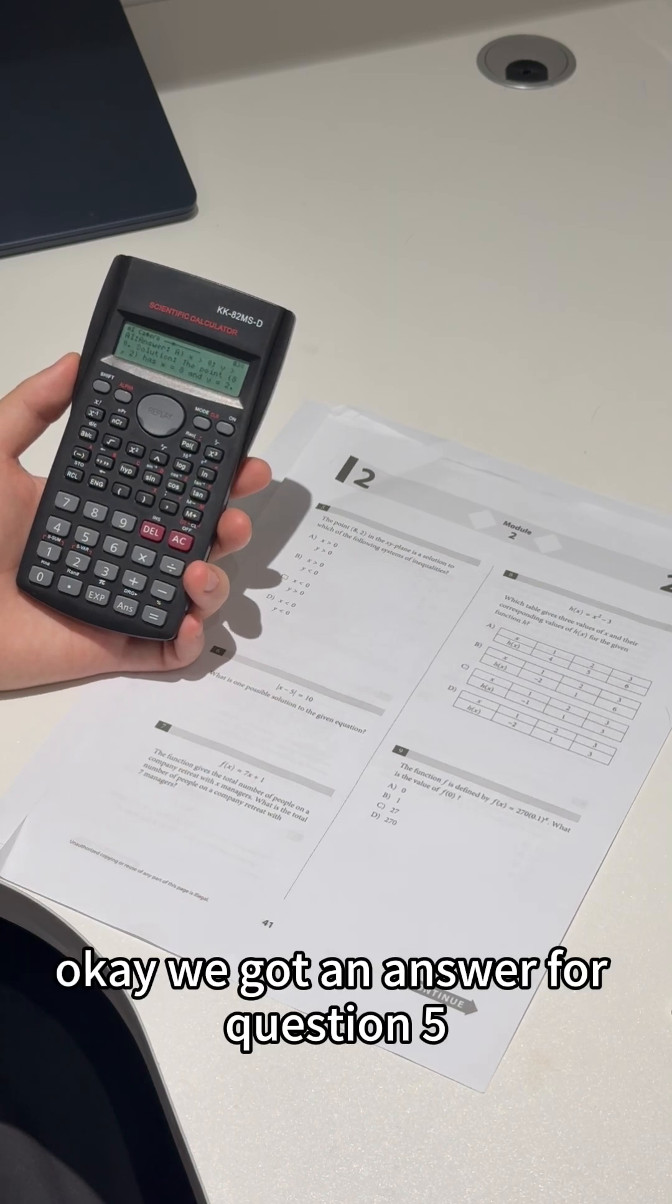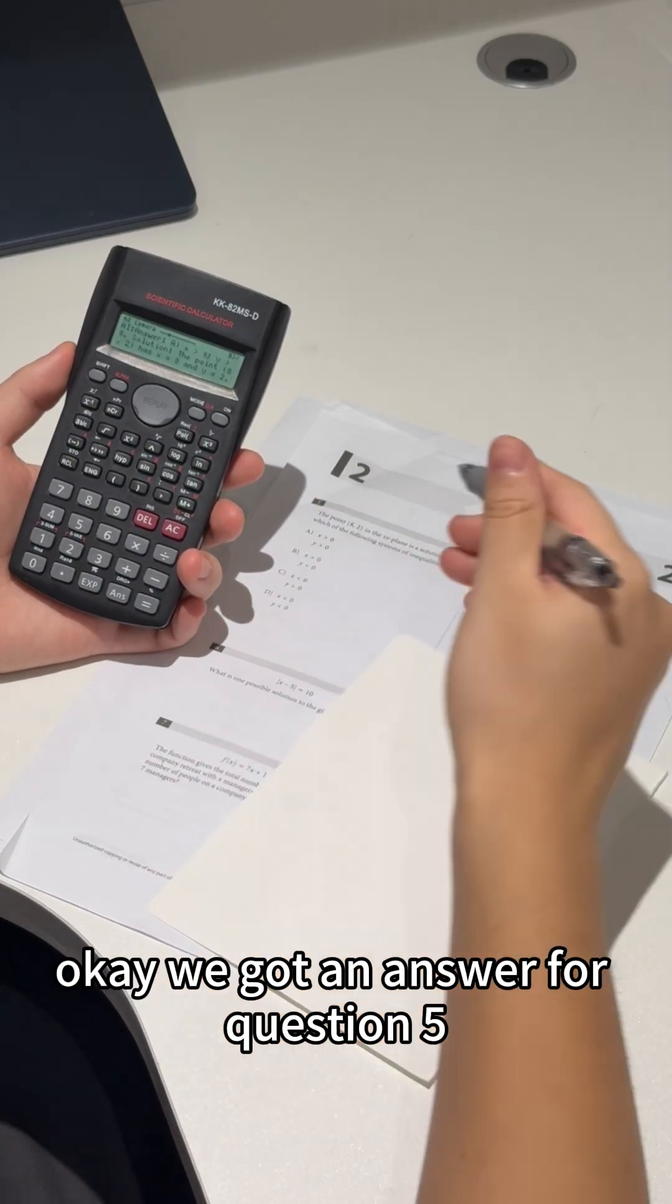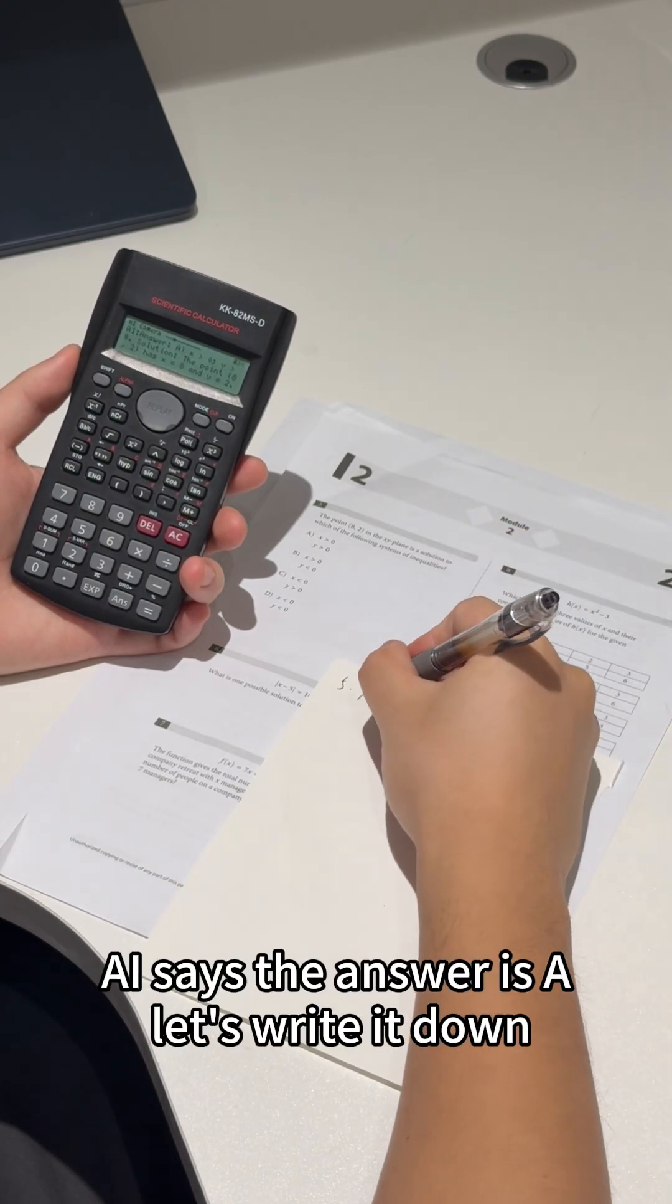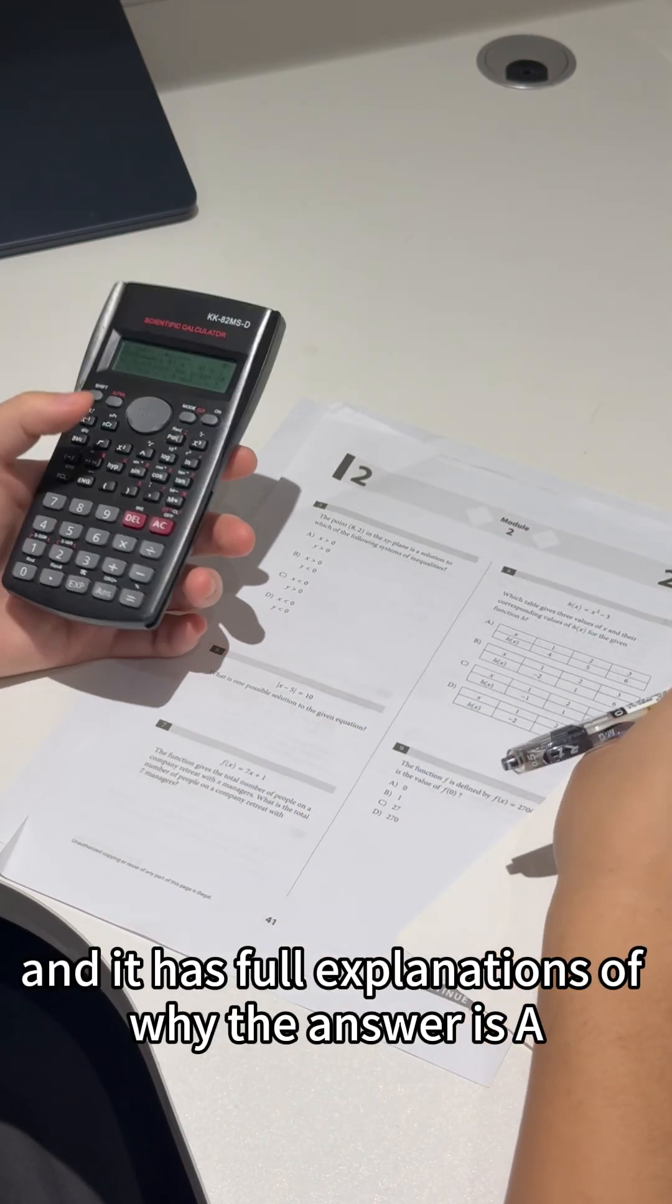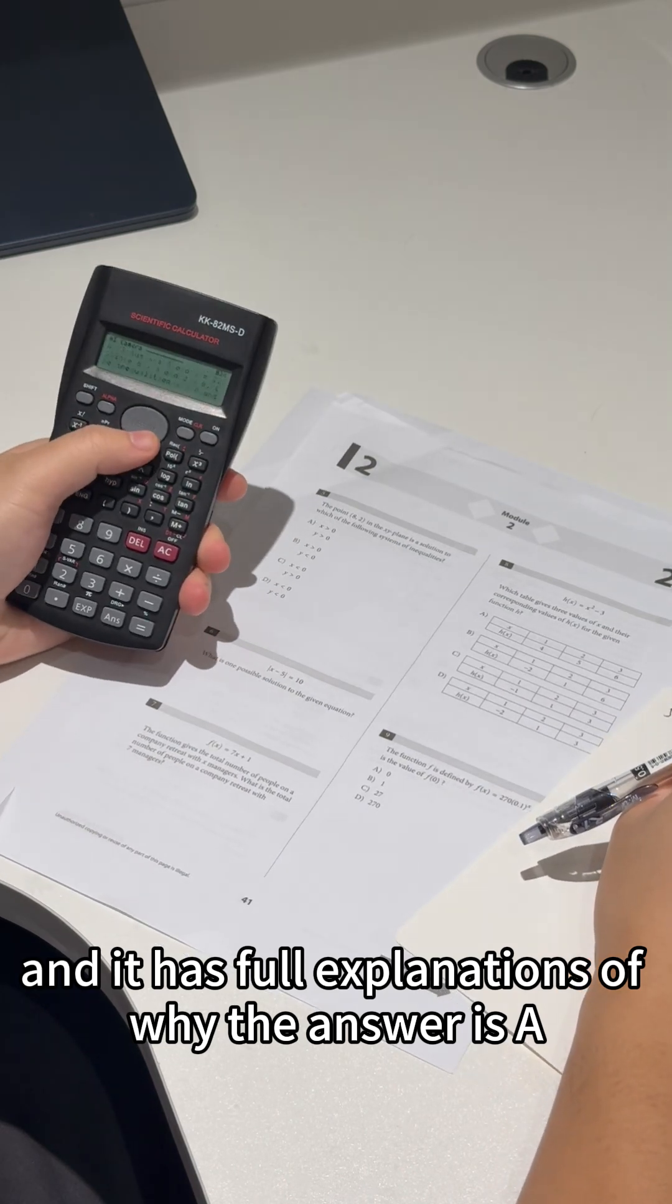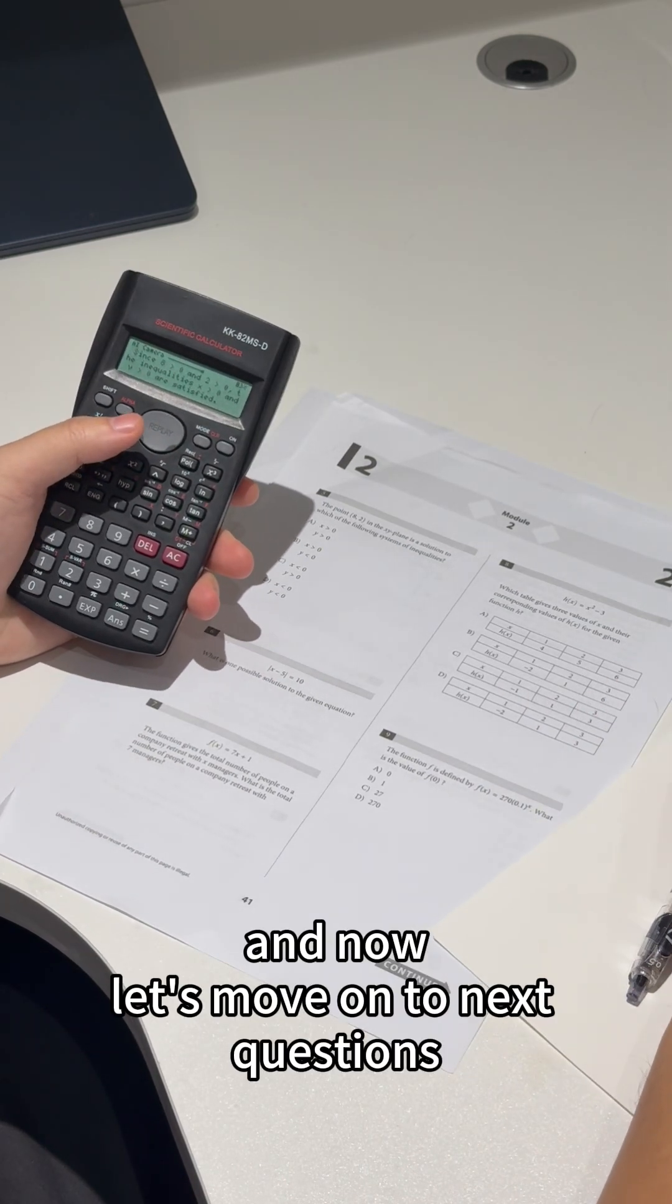Okay, we got an answer for question five. AI says the answer is A. Let's write it down. You have full explanations of why the answer is it. Now let's move on to the next question.